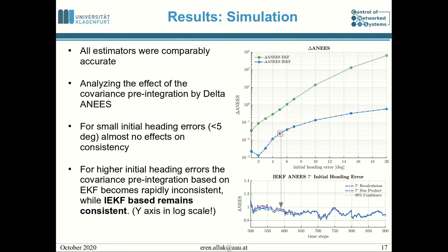To analyze the effects of covariance pre-integration we use the delta ANES. For small initial heading errors there are almost no effects on consistency. But as initial heading errors grow, EKF-based covariance pre-integration rapidly becomes inconsistent, while the IEKF-based one remains consistent. Note that the scale on the y-axis is logarithmic.